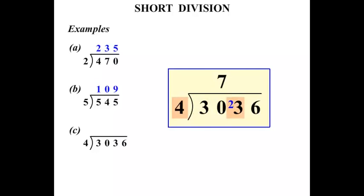4 into 23. Well, it will go 5 times. 5 fours are 20. So there's 3 left over. And 4 into 36 goes exactly 9 times. So our answer there, 759.